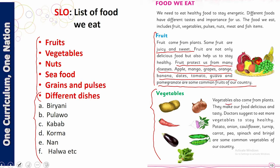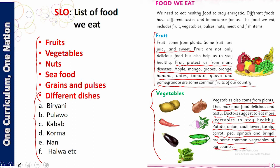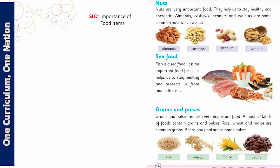Vegetables are also very important and keep us healthy. Vegetables come from plants. They make our food delicious and tasty. Doctors suggest eating more and more vegetables to stay healthy. Potato, onion, cauliflower, turnip, carrot, peas, spinach, and brinjal are some common vegetables of our country.